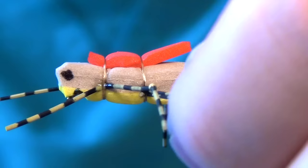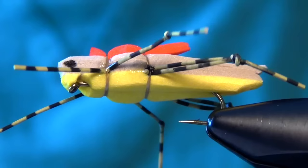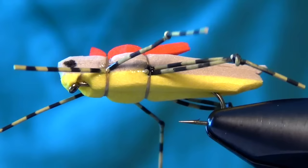That is a finished Moorish hopper. It's a great little hopper pattern. Very, very deadly. It can be tied in a lot of different color variations. That is the yellow and tan hopper. It can be tied in pinks, purples, tans, olives, basically whatever color you can imagine. That is the Moorish hopper.